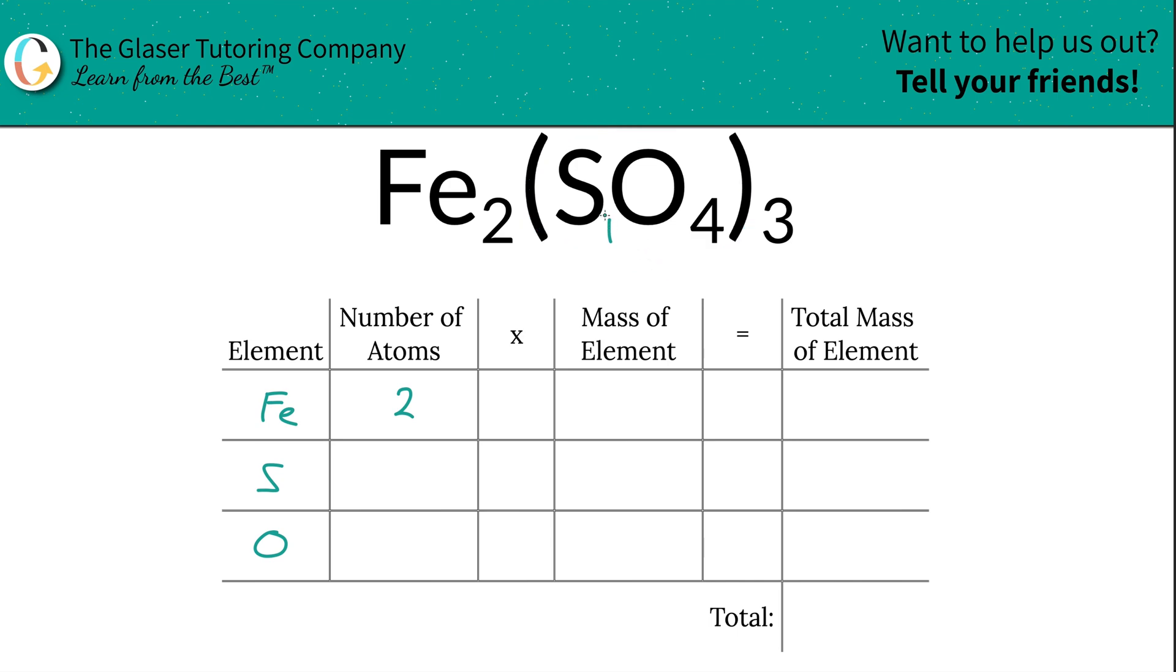So all you have to do to find the total sulfur is take that subscript of sulfur and multiply it by the outer subscript of 3. So the total amount of sulfur then would be 3. And then same thing for oxygen, you just multiply those numbers together so it's 12.